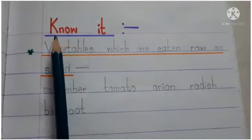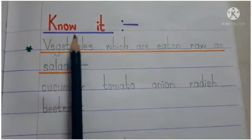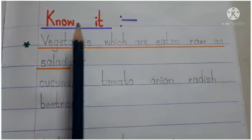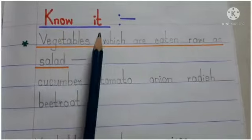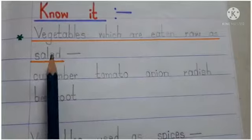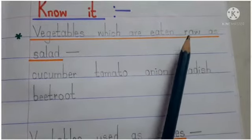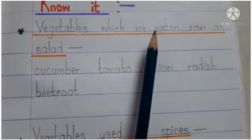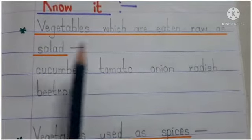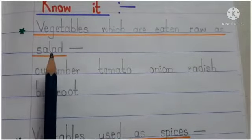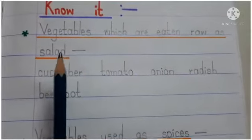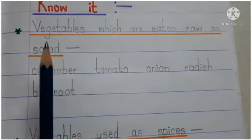Know it — K-N-O-W I-T — means yah jaaniye. Vegetables which are eaten raw as salad. Raw — R-A-W — means kachha. These are the vegetables which are eaten raw as salad.